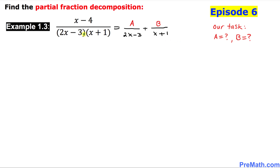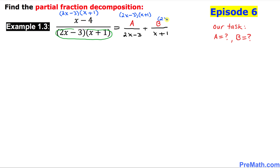In our next step, let's focus on the denominator on the left hand side: (2x minus 3) times (x plus 1). We are going to multiply this quantity across the board — multiplying each fraction by (2x minus 3) times (x plus 1).